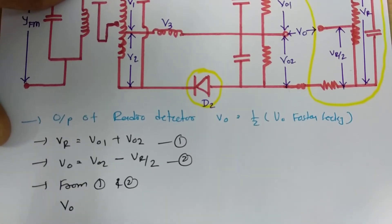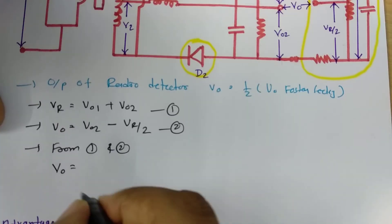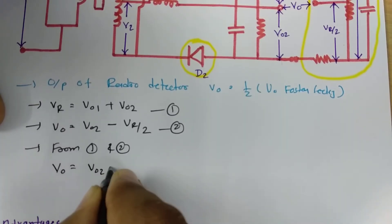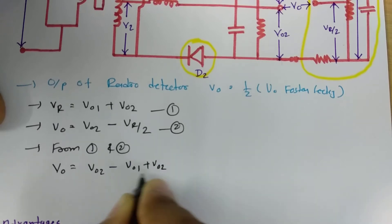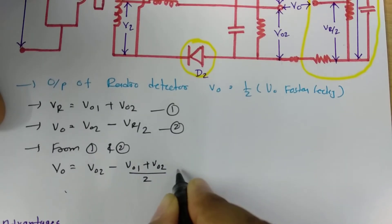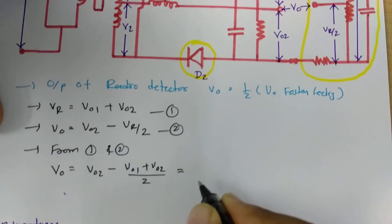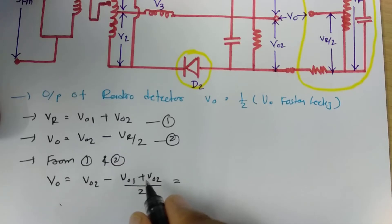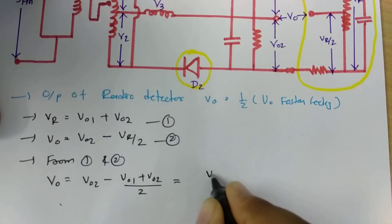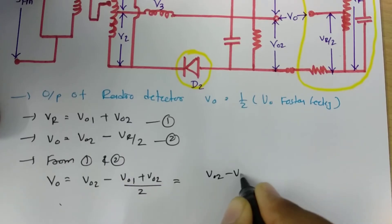We will be having output voltage that is V02 minus VR is V01 plus V02 by 2. So if you take LCM, that will be 2 V02 minus V02...